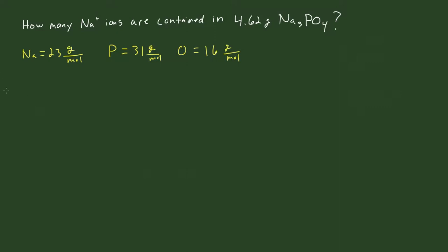So we just sum this up. In trisodium phosphate, there are three sodium atoms, so we have 3 × 23 g/mol, plus 1 phosphorus at 31 g/mol, plus 4 oxygens so that's 4 × 16. So that gives us a molecular weight of 3 × 23 + 31 + 4 × 16 = 164 g/mol. So the molecular weight of trisodium phosphate is 164 g/mol.